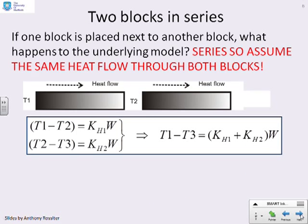What happens then if I place two blocks in series? Now, because these are in series, then there's an underlying assumption that the heat flow through both blocks must be the same. OK, so although I've sort of put a gap here so you can see there's two blocks, in practice what we're going to assume is those two blocks are touching each other, but at the join, the temperature is T2.